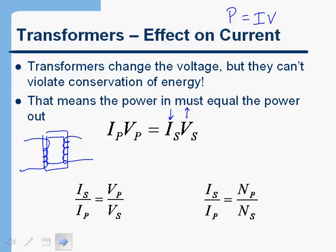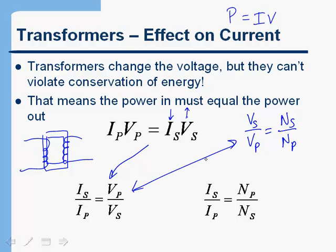Combining that with the other equation we had — Vs over Vp equals Ns over Np — we can combine those two equations in a couple of different ways. Rewriting the equation for current in terms of voltage, and combining the two equations, gives us another form. Depending on what we're looking for in the problem — whether it's current, voltage, or number of turns — we might use any one of these equations.